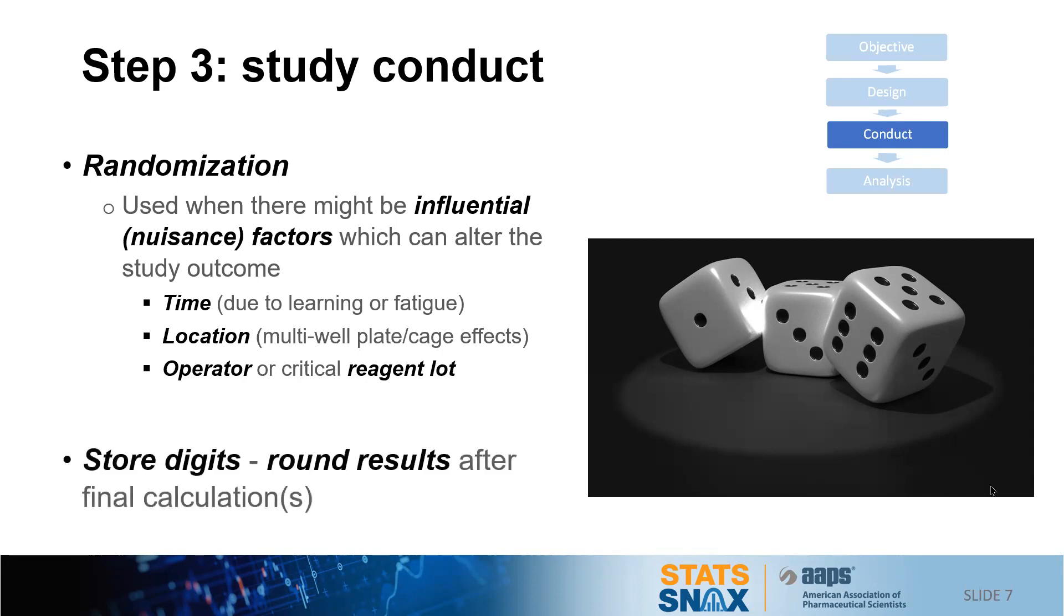One other matter of conduct would be what do we do with the data? The rule of thumb is to store as many digits as possible, all digits, and only round results after the final calculation. This is not commonly done in the pharmaceutical industry where common practice is to store to the number of digits of the specification. So if a specification has only two digits, usually only two digits are stored. But if we go on to reuse that data, for instance for stability analysis, we've lost a lot of information, and this can result in added variability in the study.